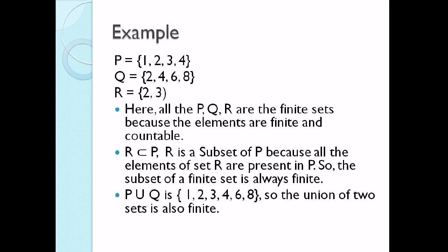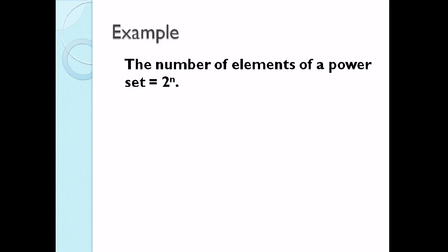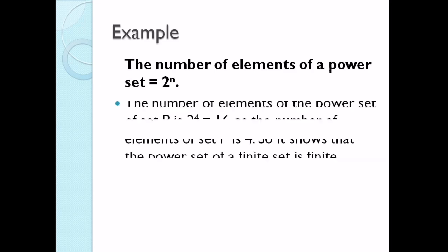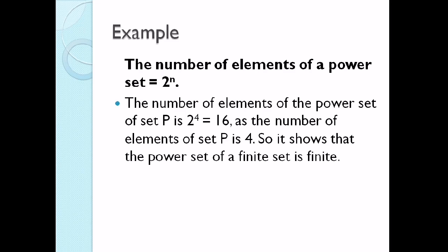P union Q: combining the elements of P and Q gives {1, 2, 3, 4, 6, 8}. So the union of 2 finite sets is also finite. Those are the properties of finite sets. Also, the number of elements of a power set equals 2 raised to N. The number of elements of the power set of set P is 2 to the 4th, which equals 16, since set P has 4 elements. So the power set of a finite set is finite.